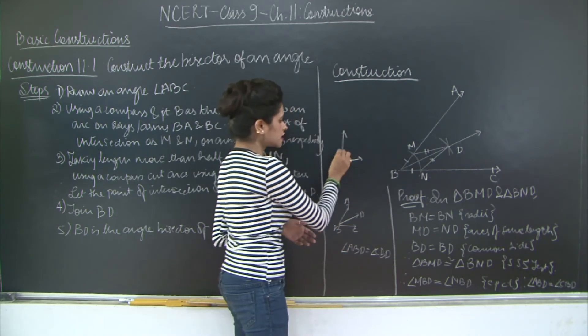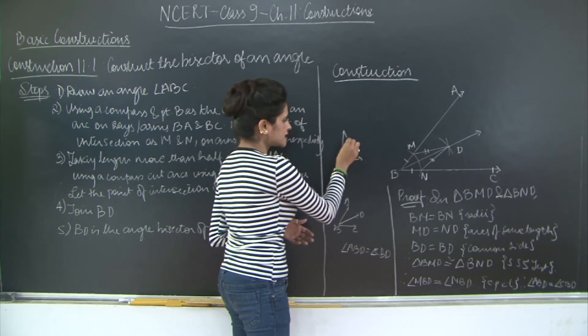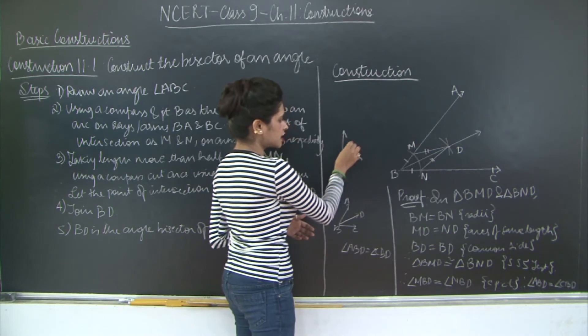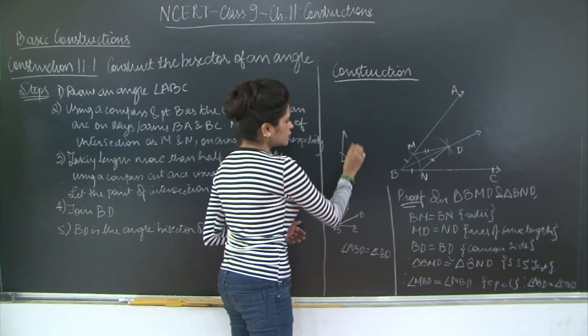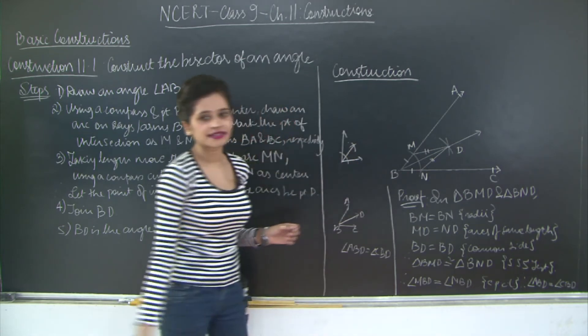Similarly you just need to suppose this is the center vertex. You cut an arc here. Using this as a center you cut an arc here. Using this as a center you cut an arc here. So this is let's say your arc. You join the center here.